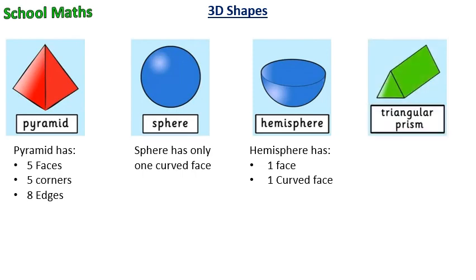This shape is triangular prism. It has 5 faces, 6 corners, and 9 edges.